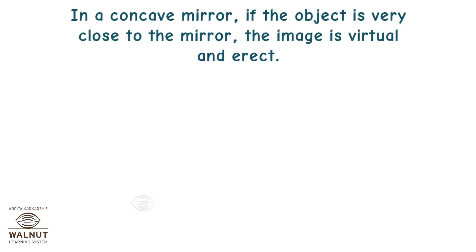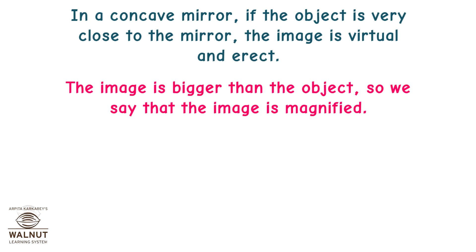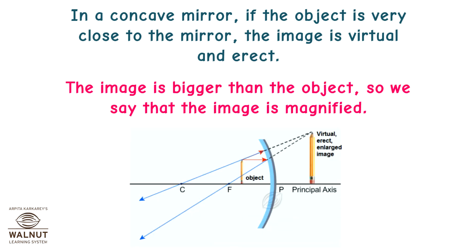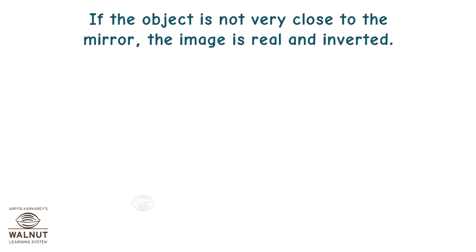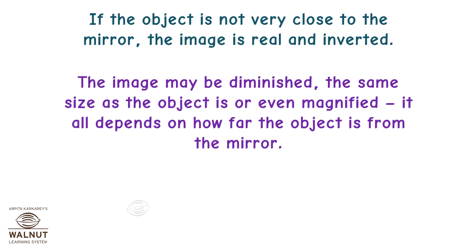In a concave mirror, if the object is very close to the mirror, the image is virtual and erect, and bigger than the object — so we say the image is magnified. If the object is not very close to the mirror, the image is real and inverted. The image may be diminished, the same size as the object, or even magnified, depending on how far the object is from the mirror.